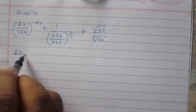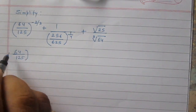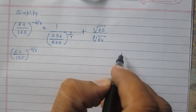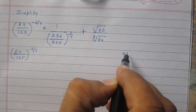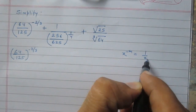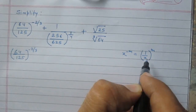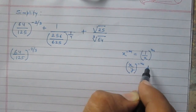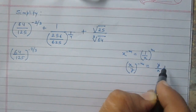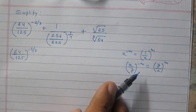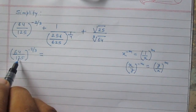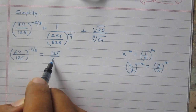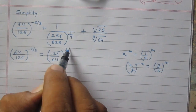Consider 64 upon 125 raised to the power minus 2 by 3. According to the laws of exponents, x upon y raised to the power minus m is equal to y upon x raised to the power m. Using this rule, we can write 64 upon 125 raised to the power minus 2 by 3 as 125 divided by 64 raised to the power 2 by 3.